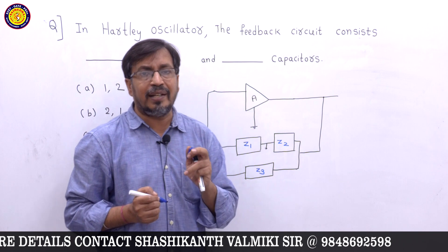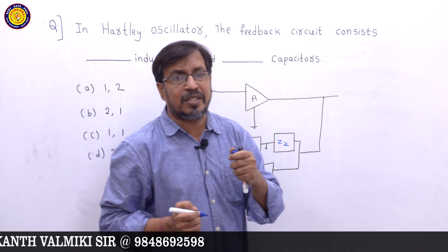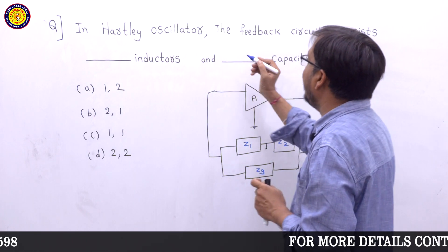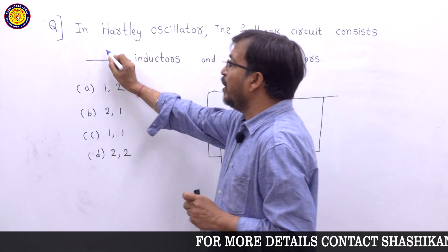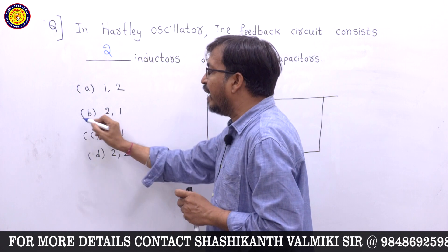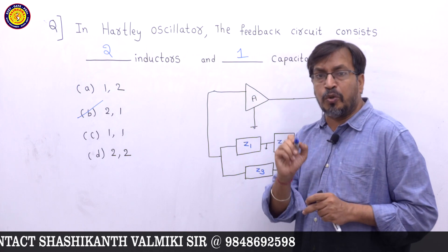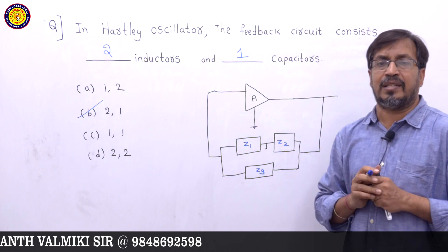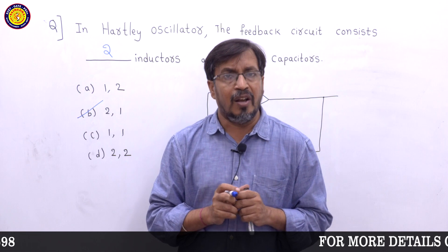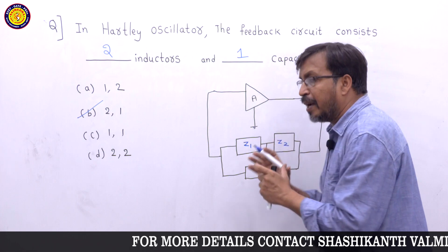In the Hartley oscillator, the feedback circuit consists of two inductors and one capacitor. So the answer is option B: 2 inductors, 1 capacitor. For the Colpitts oscillator, the feedback circuit has Z1 and Z2 as capacitors and Z3 as an inductor — that is, 2 capacitors and 1 inductor.